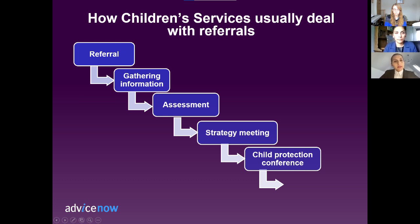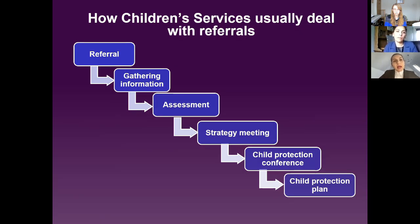This meeting is called a child protection conference. The people at the conference will make a decision if a child needs to be placed on a child protection plan. The plan should set out: the concerns that have led to the decision to make a child protection plan, what help parents and their child or children will get, what parents need to improve, what will happen if parents don't manage to make the changes, how much improvement is needed, and what a social worker and other professionals will do to help protect a child and by when.